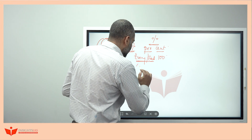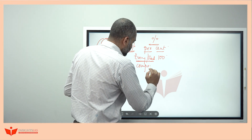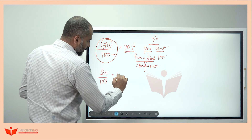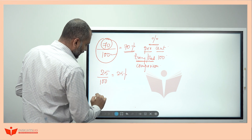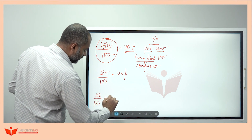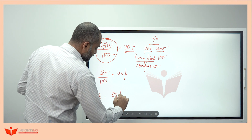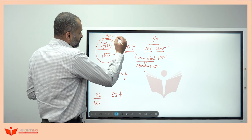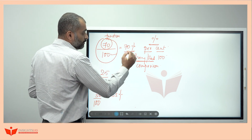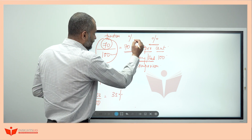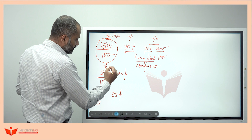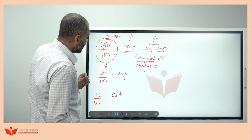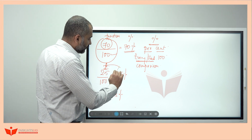For example, 25 when compared to 100 is called 25%, and 33 compared to 100 is 33%. Observe that 70 by 100 is in fraction form, and the same fraction can be expressed as 70%. Similarly, 25 by 100 and 33 by 100 are fractions. In this way, I have converted fractions to percentages.